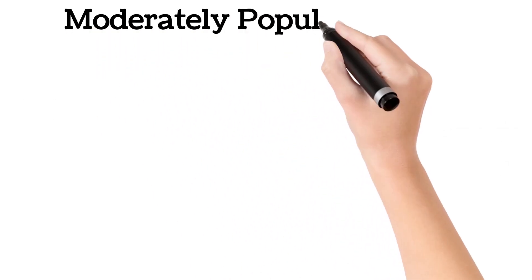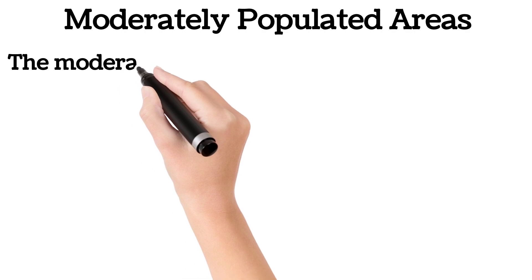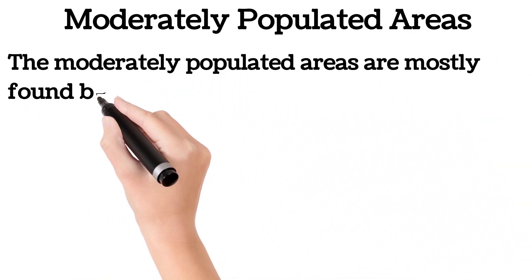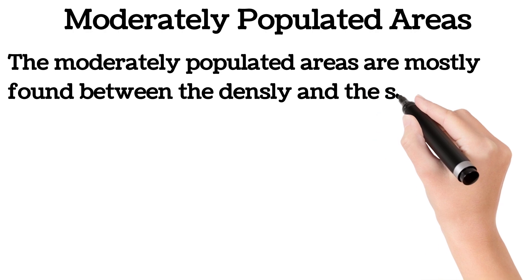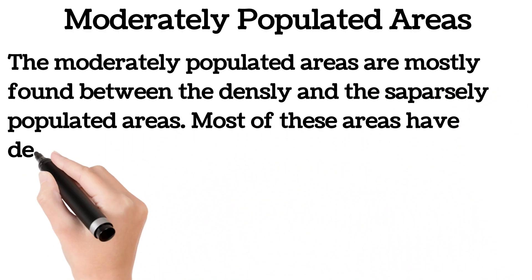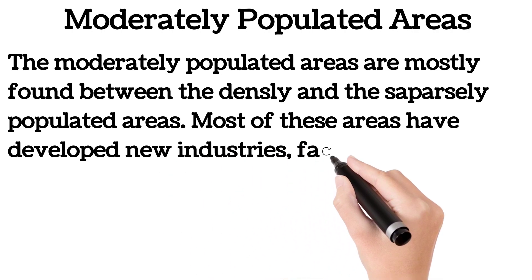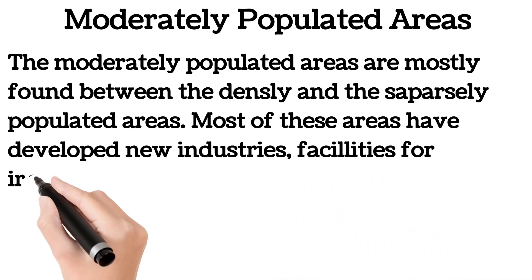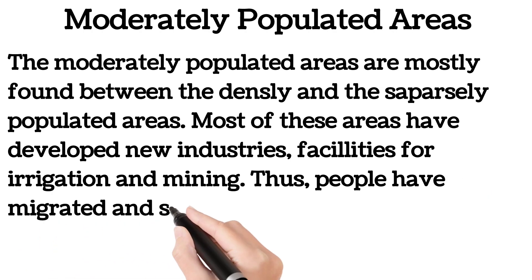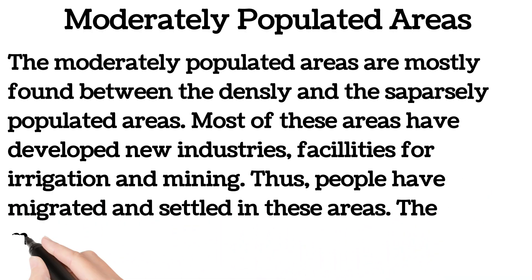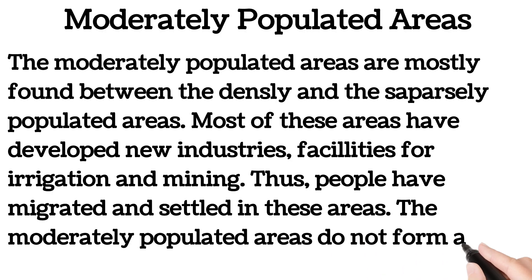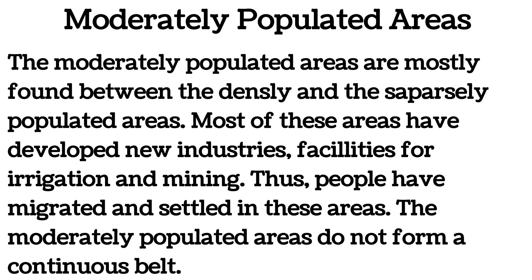Moderately populated areas are mostly found between the densely and the sparsely populated areas. Most of these areas have developed new industries, facilities for irrigation and mining, and thus people have migrated and settled in these areas. The moderately populated areas do not form a continuous belt.